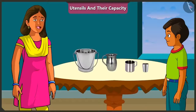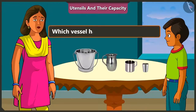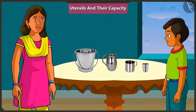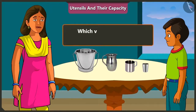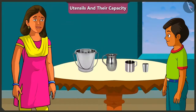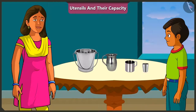Great! Mishtu, now tell me which of these vessels has the greatest capacity? The bucket has the most capacity. And which vessel has the least capacity? Here, the smallest vessel is the glass, so the glass has the least capacity. Well done, Mishtu.